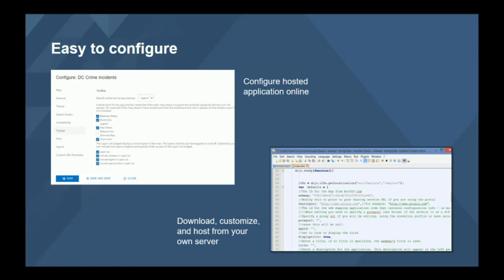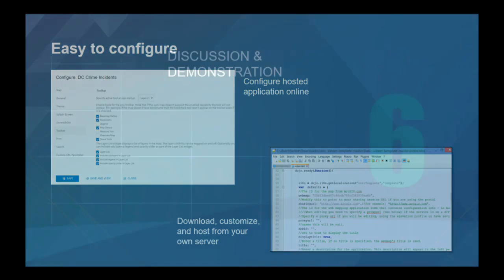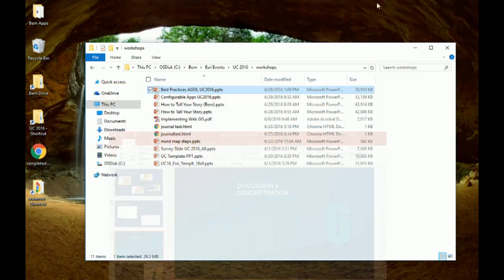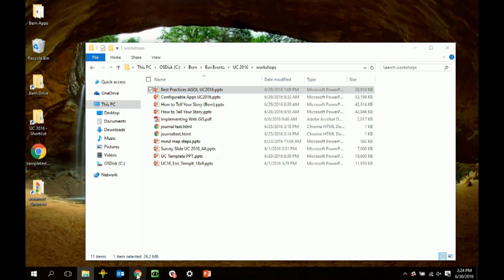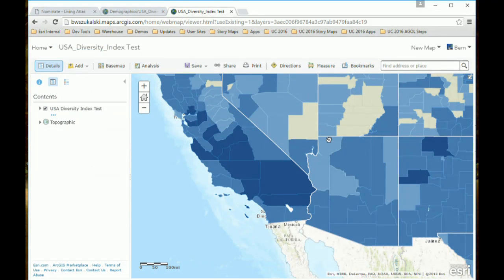That's a pretty advanced use case and not everybody will want to do it, but it is an option. For most people, the easiest way to create configurable application templates is to use Web App Builder — that's one of the unique and totally cool things about Web App Builder. If you're looking to create custom templates and a custom template gallery for your organization, the easiest approach is to use Web App Builder, create the app you want, click a button to download the code, and it becomes a configurable application you can host and insert into your organization.